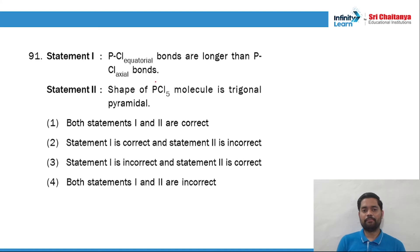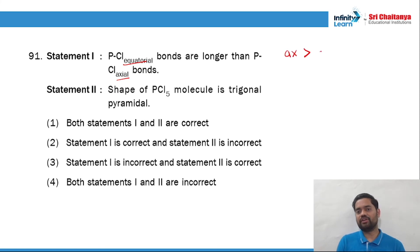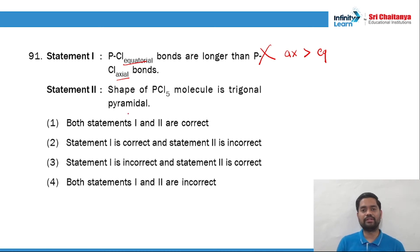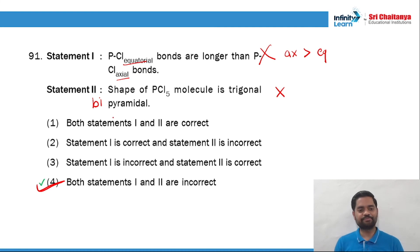Question 91: 'PCl5 equatorial bonds are longer than axial' — wrong. Always remember axial bonds are longer than equatorial. So this is a wrong statement. 'Shape of PCl5 molecule is trigonal pyramidal' — wrong; it is trigonal bipyramidal. Both statements are incorrect, and question 91 option number 4 is the right answer.